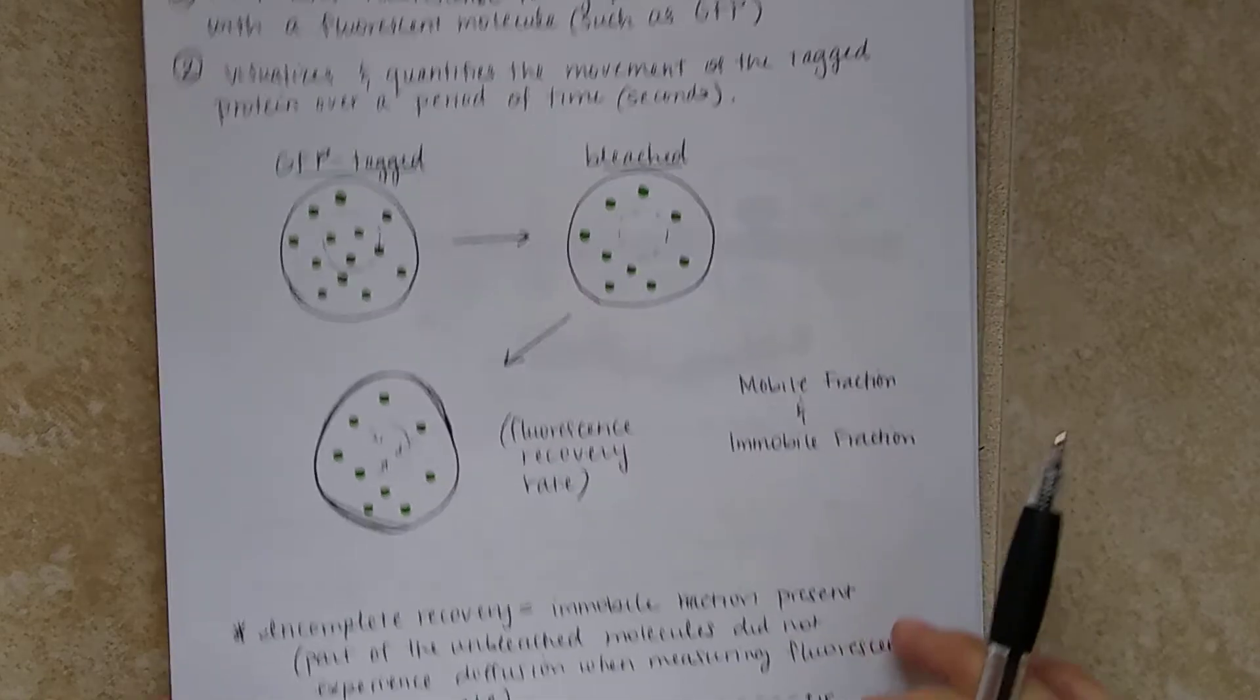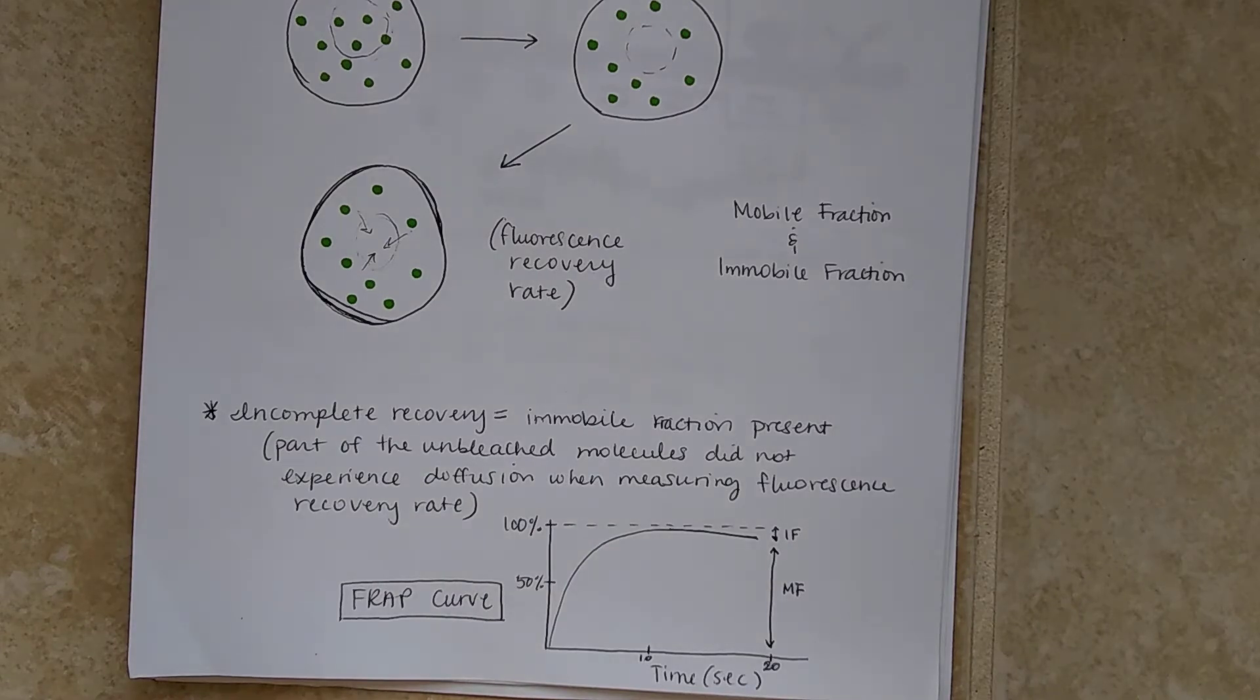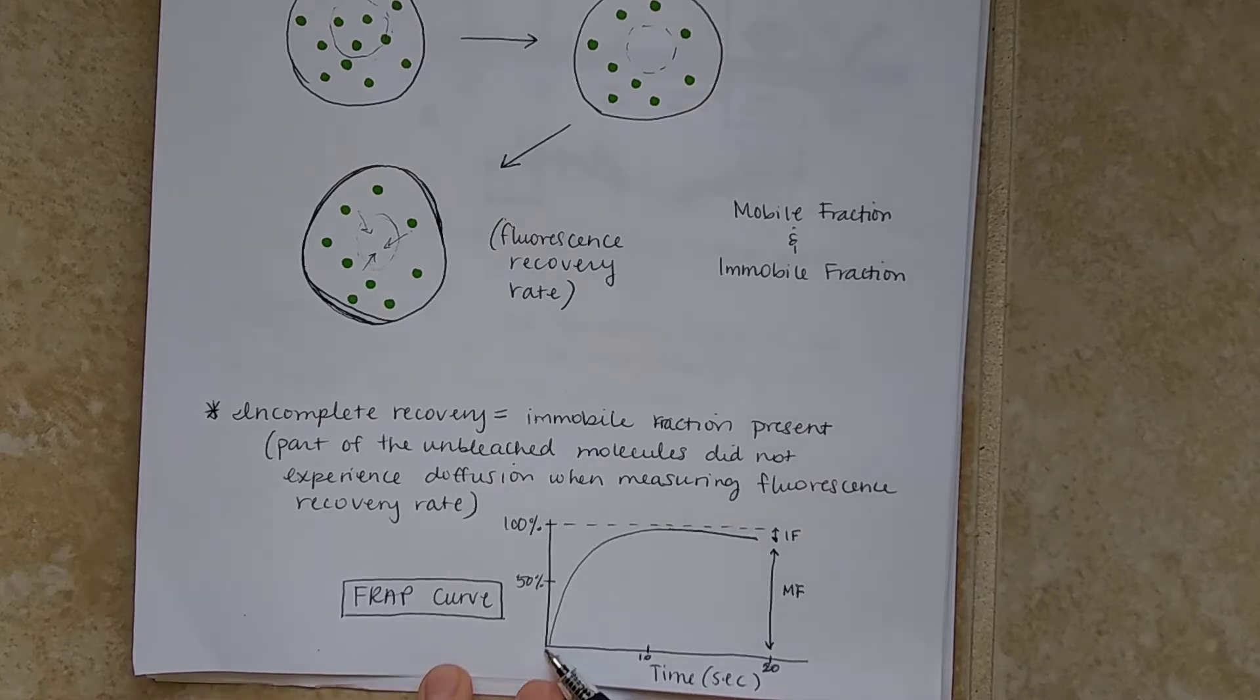So whenever we're talking about an incomplete recovery, it refers to the immobile fraction present, which is part of the unbleached molecules that did not experience diffusion when measuring fluorescence. So that means that there is an incomplete recovery. So looking at this curve, we can see exactly what that means.